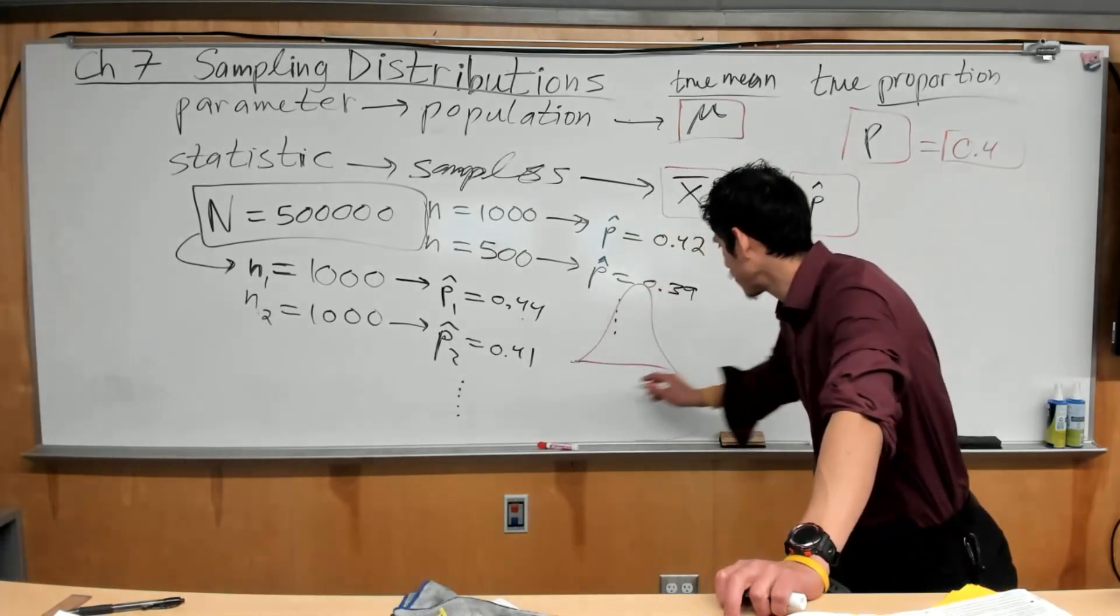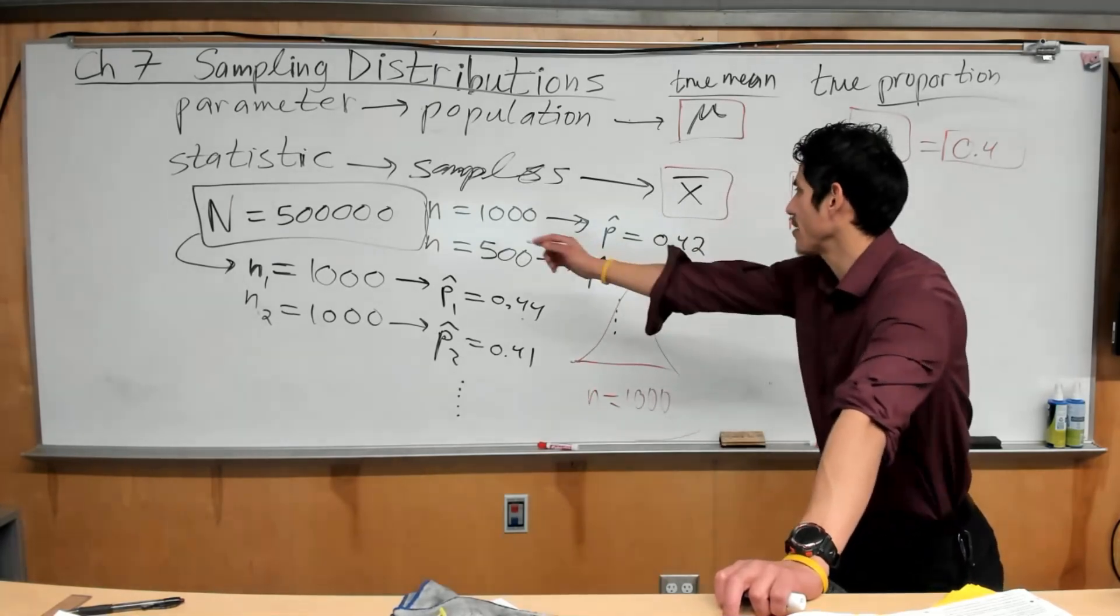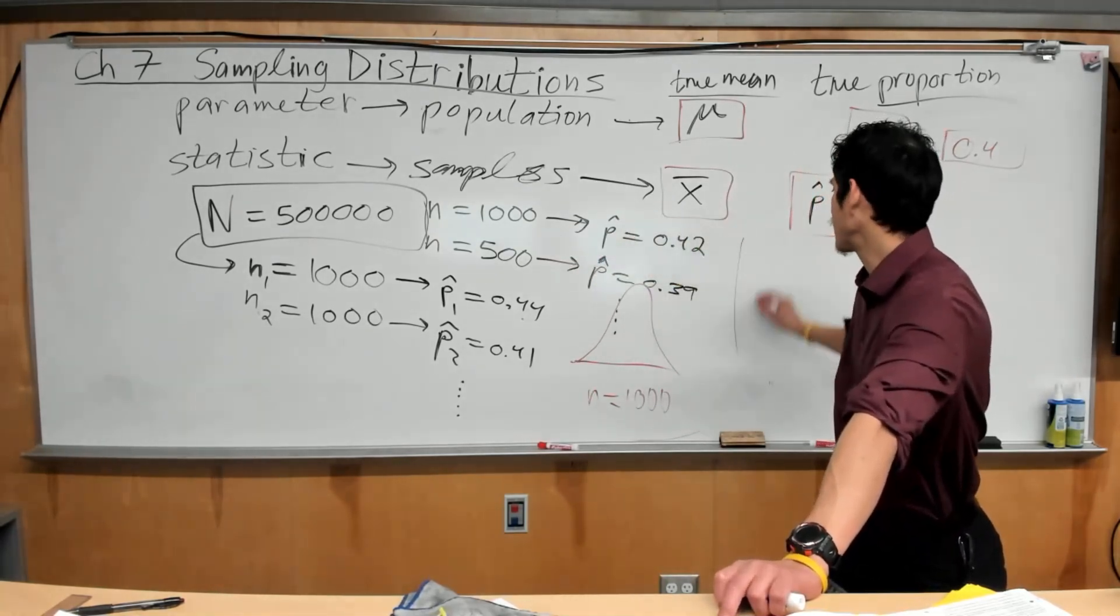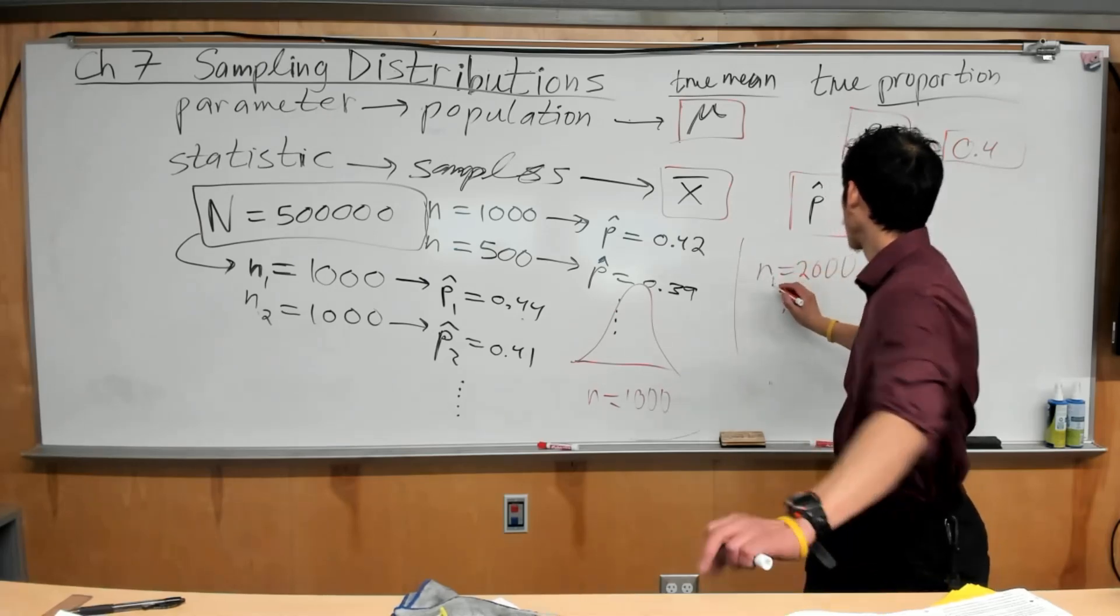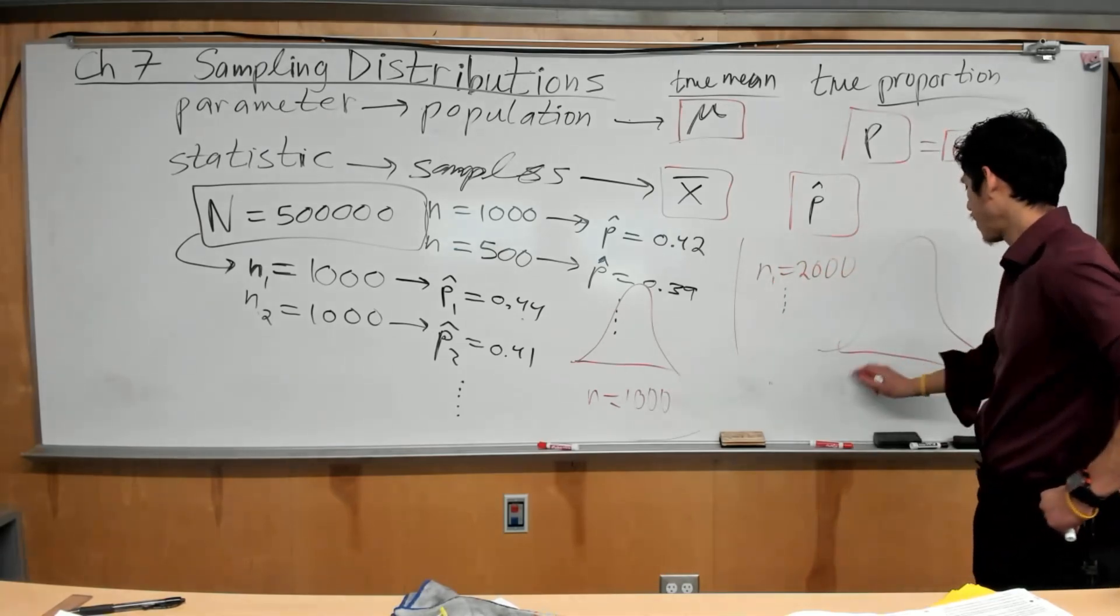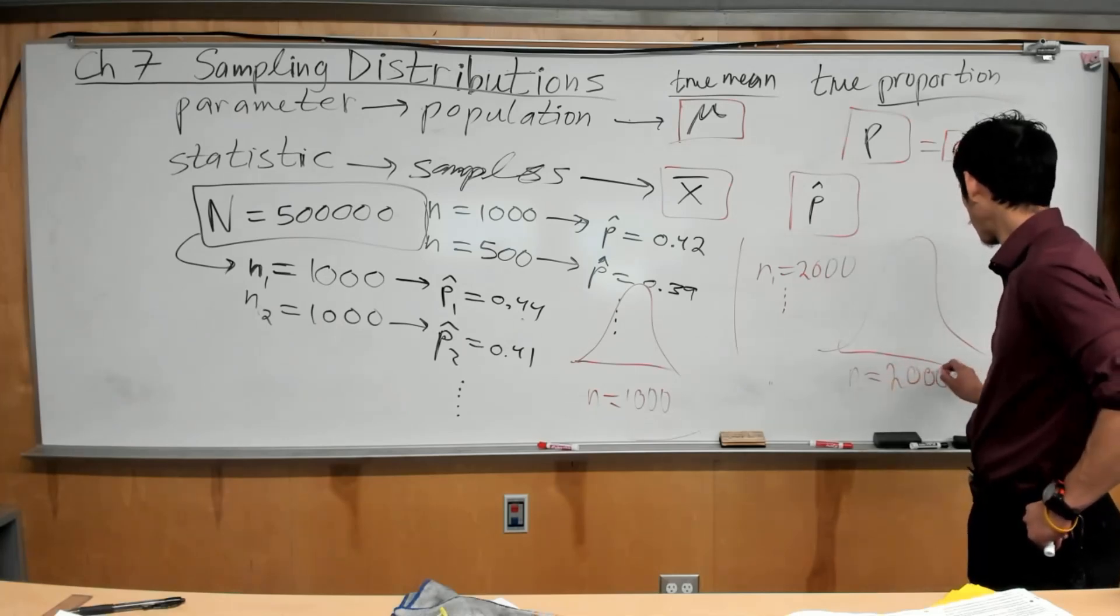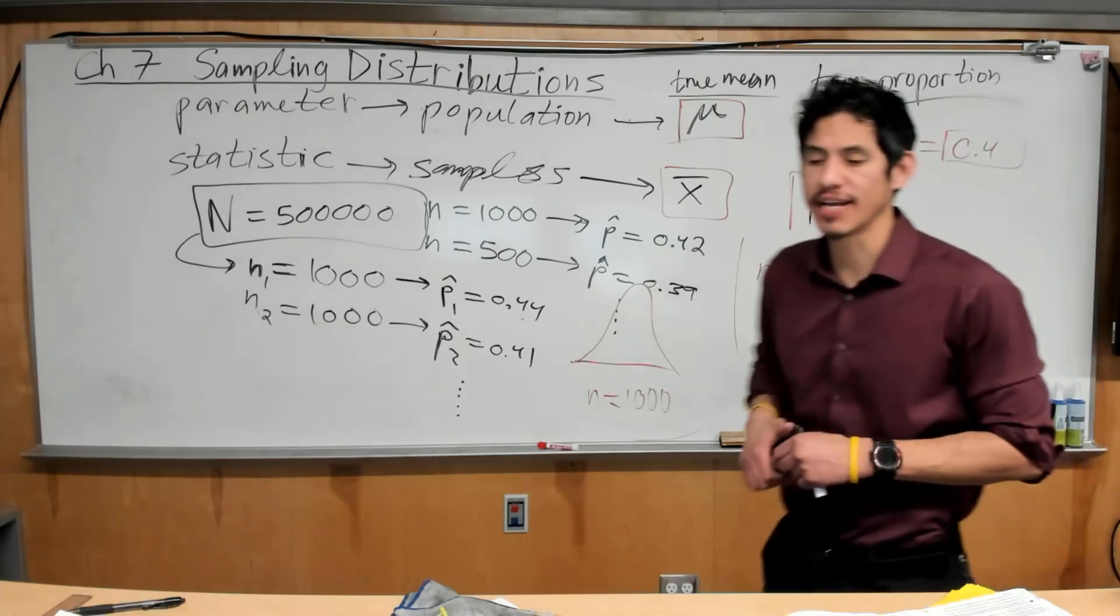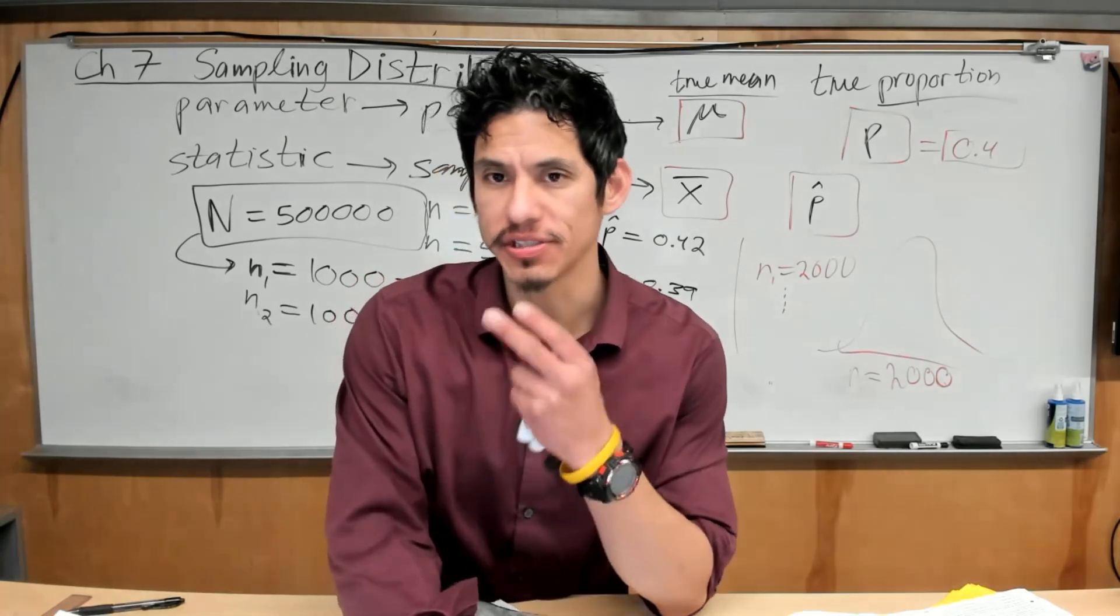So you have one sampling distribution where N is 1,000. But if you were to say, okay, I'm going to take samples of size 2,000, you're going to be talking about a whole different sampling distribution. That's a key thing, and that's where it gets really confusing, but let's do a practice problem because that's the best way to understand this stuff.